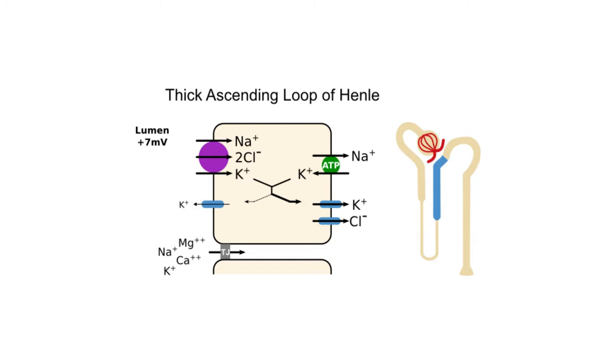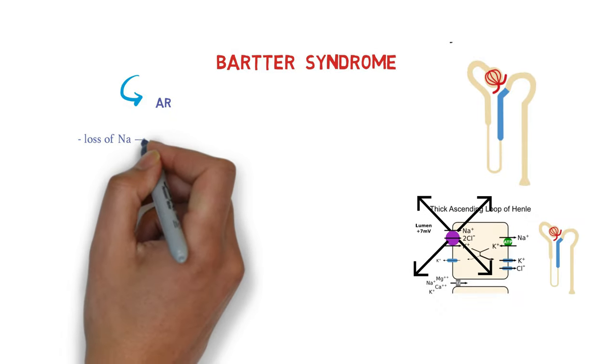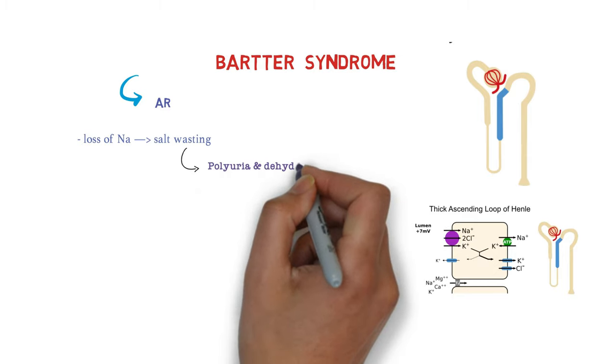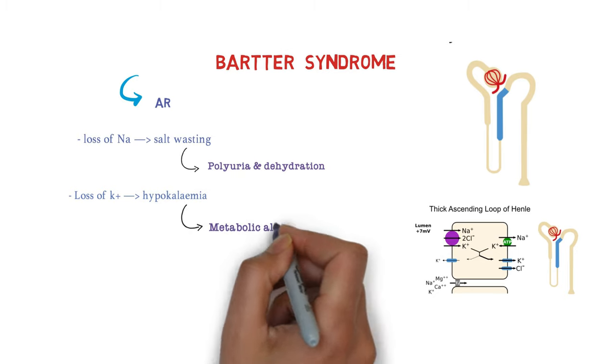In Bartter syndrome, there is a defect in this channel which causes loss of sodium leading to salt wasting leading to polyuria and dehydration. Loss of potassium, also called hypokalemia, leading to metabolic alkalosis.